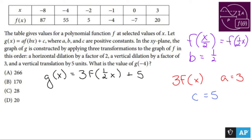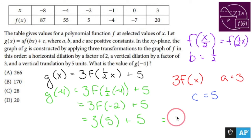They want g of negative four. So g of a negative four means I write this whole thing out and replace every x with negative four. So three times f of half of negative four plus five. Half of negative four makes this f of negative two plus five. According to this guy up here, if x is negative two, f of negative two is five. So this becomes f of negative two is five. Three times five plus five. Three times five is 15. 15 plus five is 20.